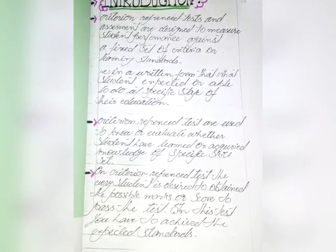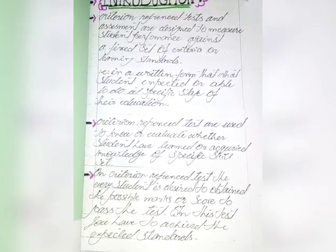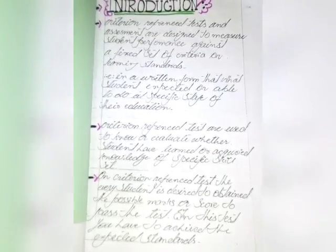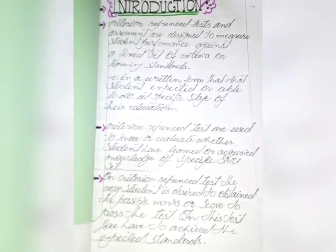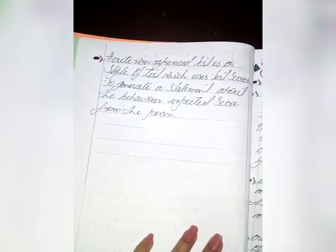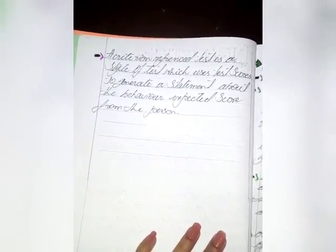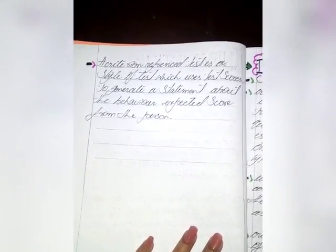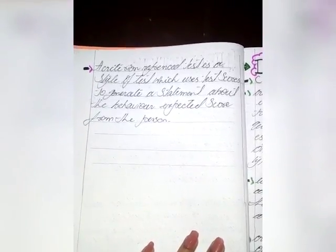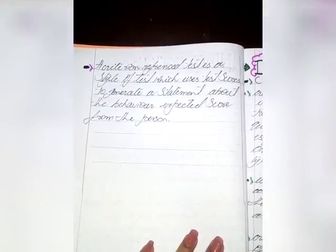The criterion reference test requires every student to obtain a passing mark or score to pass the test, and students must achieve the expected standard. If you pass the test, then you pass. The criterion reference test is a style of test that uses test scores to generate a statement about the examinee's performance against a previously expected score.